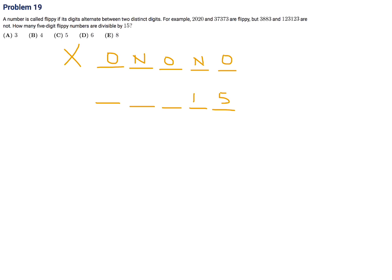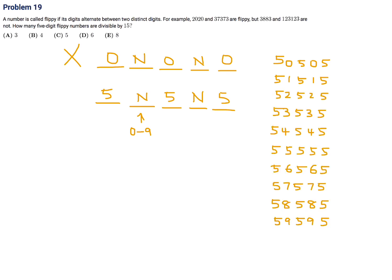So the last digit must be 5, giving the pattern 5, n, 5, n, 5, where n can be any digit from 0 to 9 except 5. That gives candidates like 50505, 51515, 52525, and so on. Checking which are divisible by 15, every third one qualifies — there are 4 such numbers. Number 19, the answer is B.